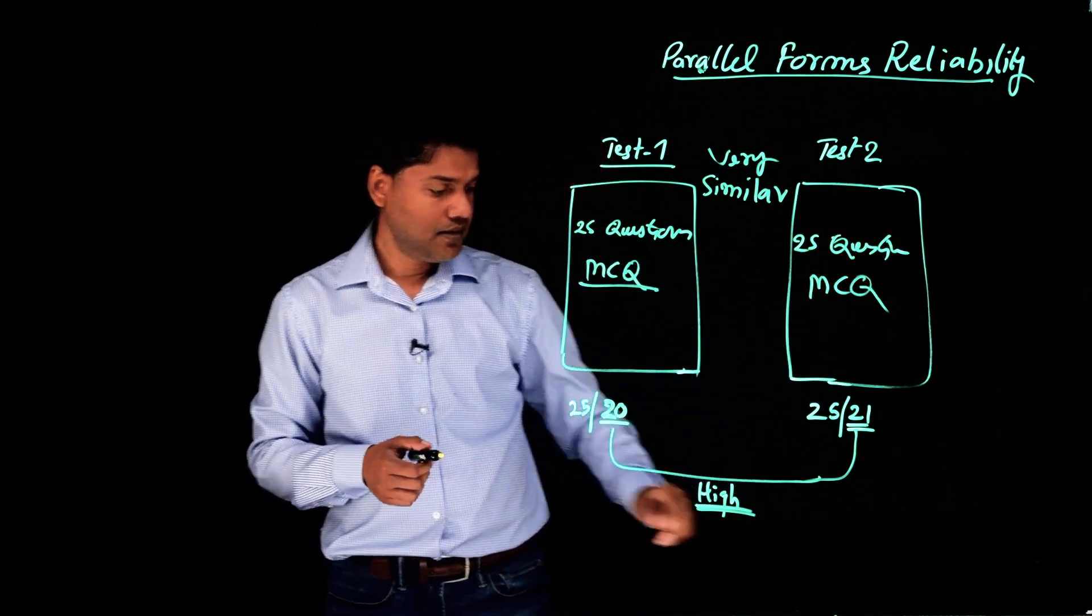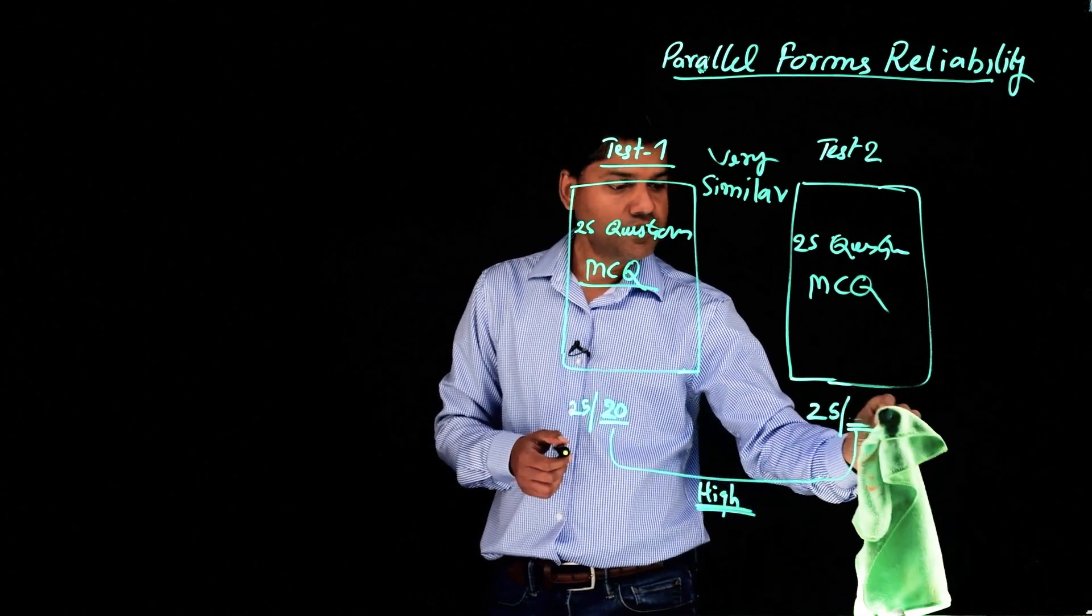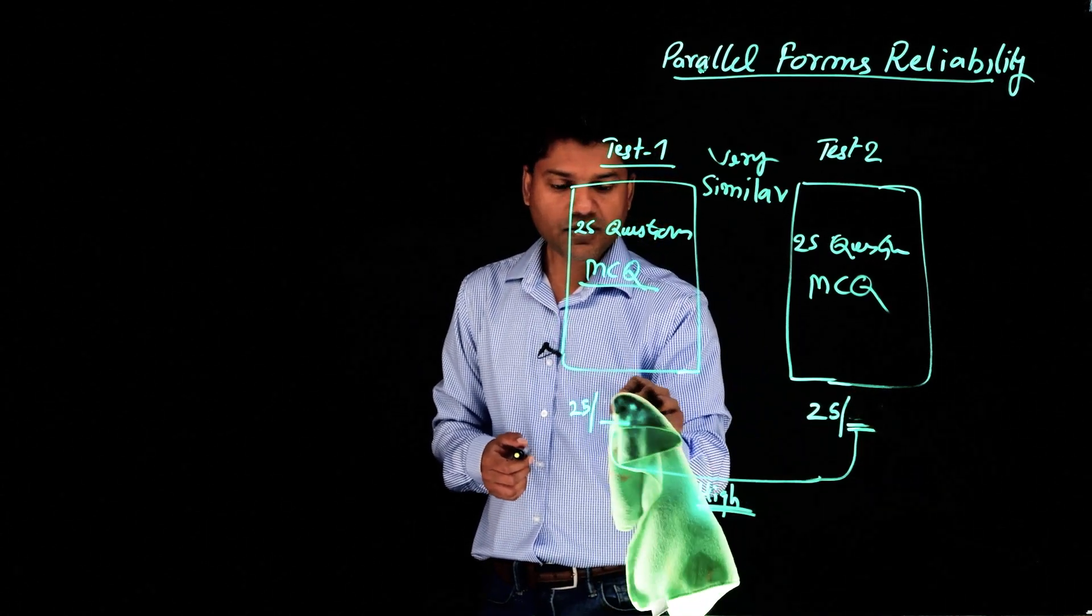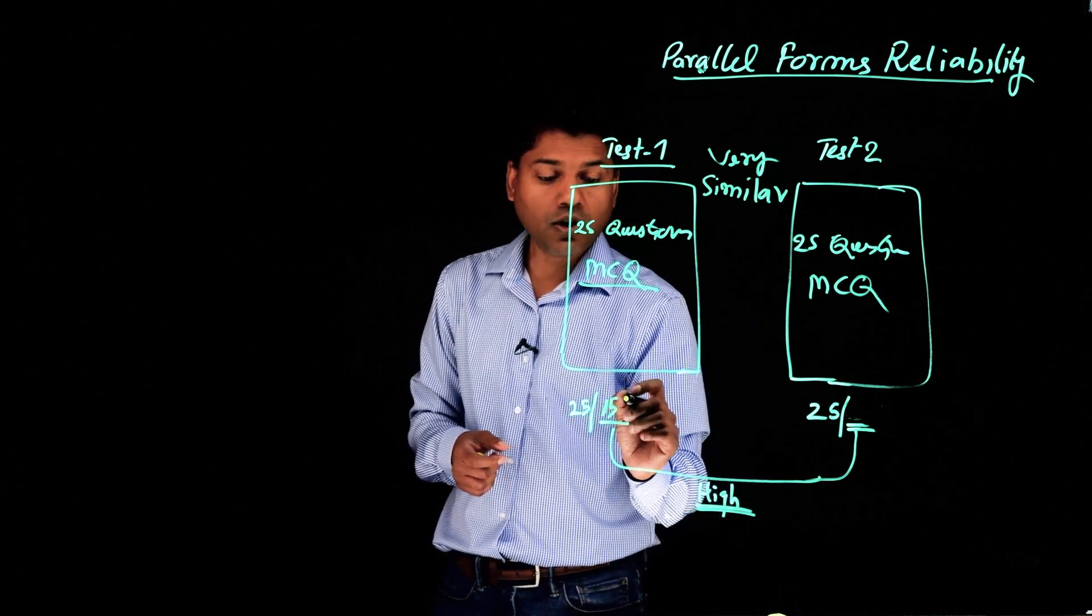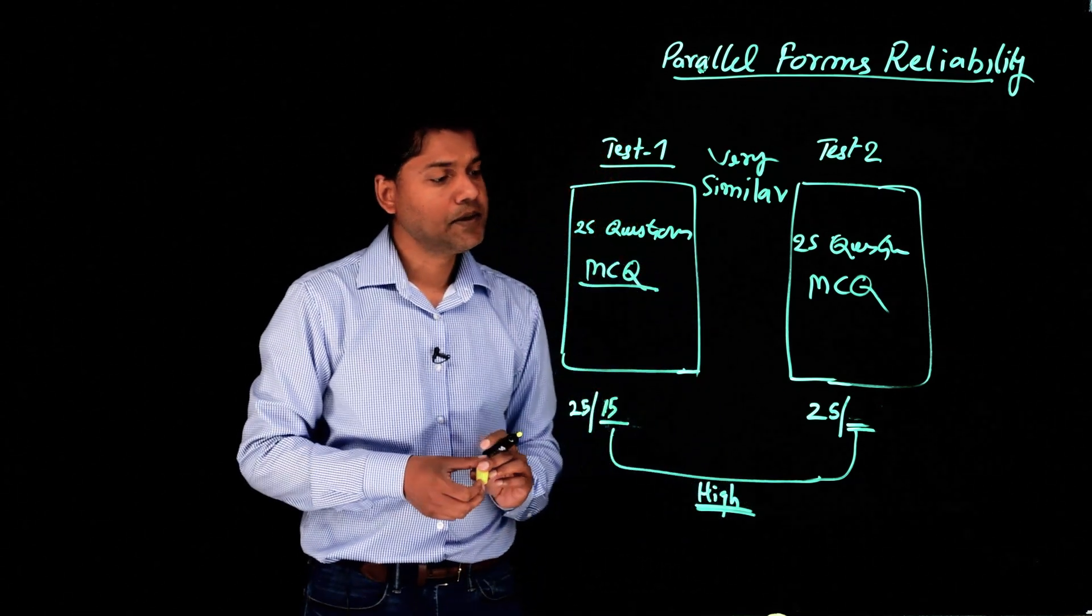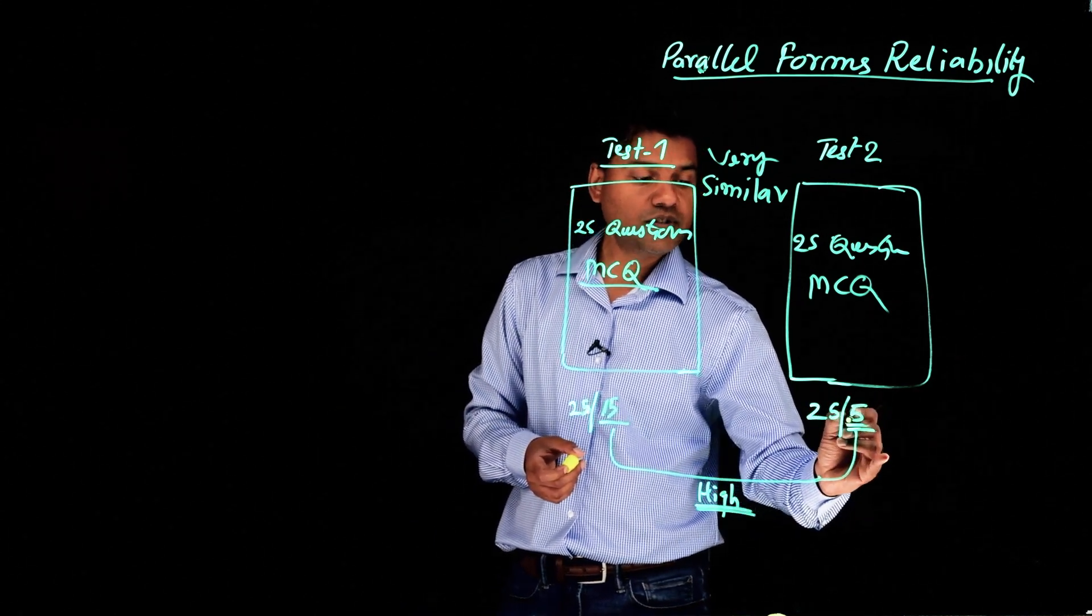Now let's say, same test, however, the scores are different. Let's say a student performed 15 questions. He got, let's say, 15 questions right. Here, this person got 5 questions right. Same student.